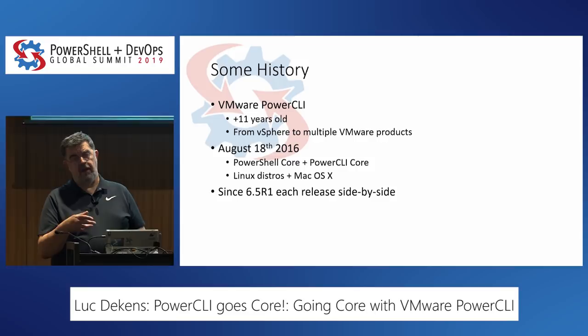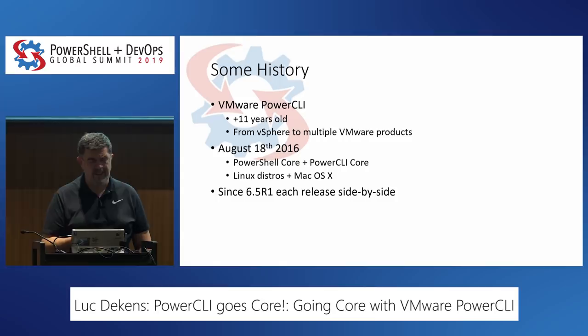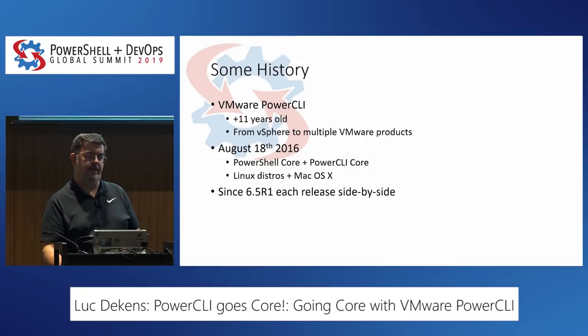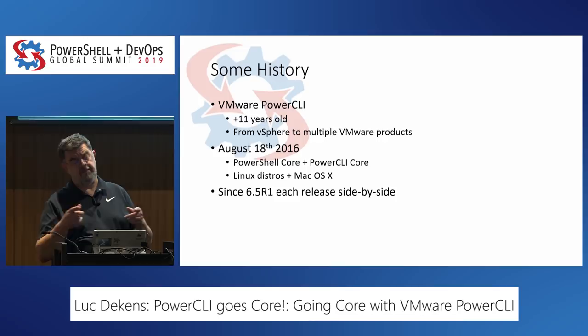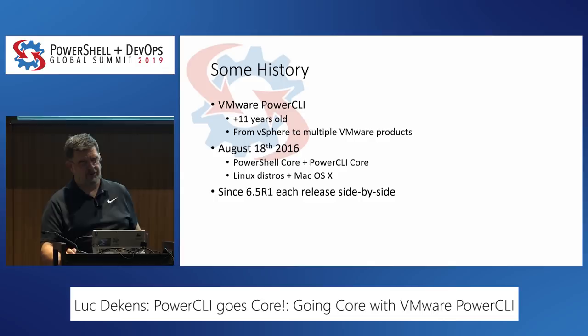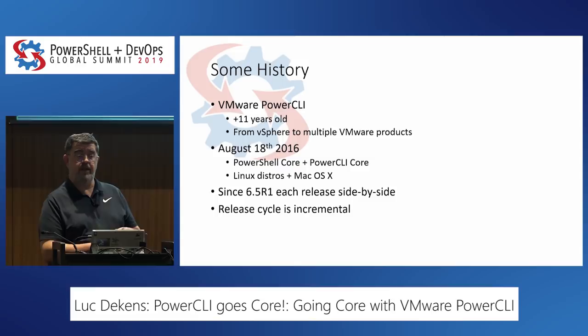They deliver it side by side for the majority of modules since the 6.5 Release 1. That means the same installation has both modules for .NET 4.5 and .NET Core 2. So if you're running PowerShell 5.1 and PowerShell 6 side by side on Windows, you can still use the same modules. Their release cycle is incremental — they keep adding new features and new modules. Last year was tremendous.